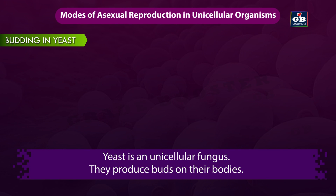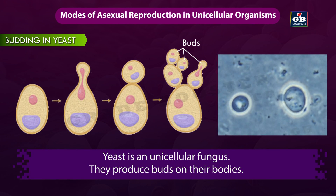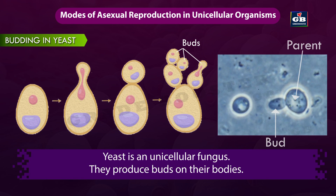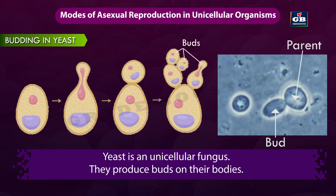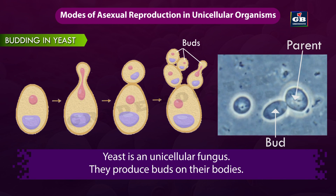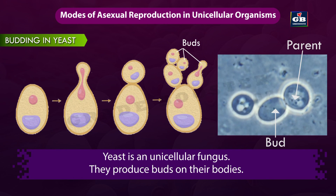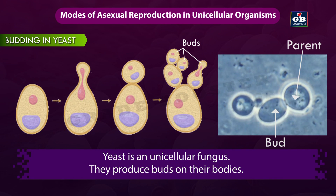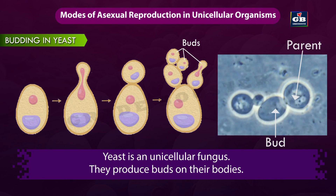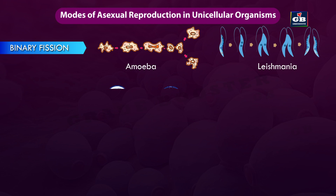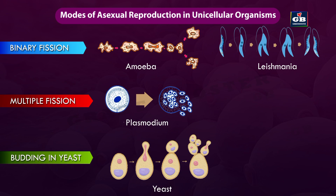Budding: Yeast is a unicellular fungus. They produce buds on their bodies. These buds get separated and grow into individual organisms. This mode of reproduction is called budding. These are the methods of asexual reproduction in unicellular organisms.